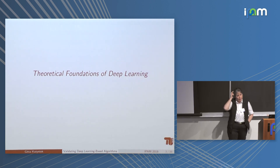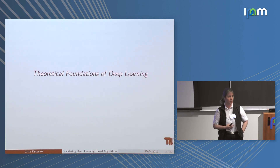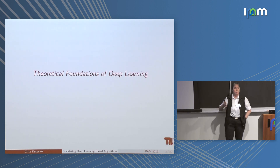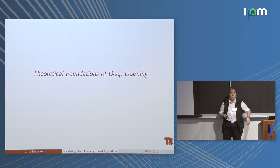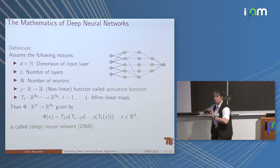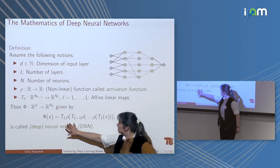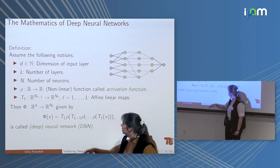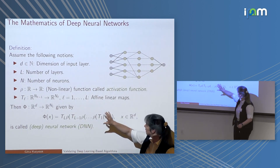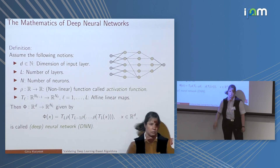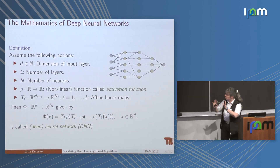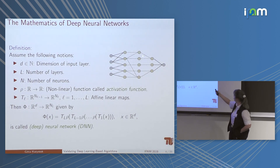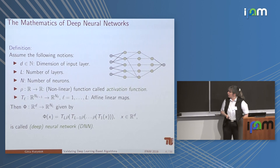Let me start with a couple of slides on what I think are necessary theoretical foundations for deep neural networks to give them a really deep understanding and make them safe for sensitive applications. Deep neural networks are a very mathematical object — in their purest form, a feed-forward neural network is just a highly structured function from R^d to R^l, composed of affine linear maps Ax+b and non-linear univariate activation functions. Important components people are interested in include the number of layers and neurons.